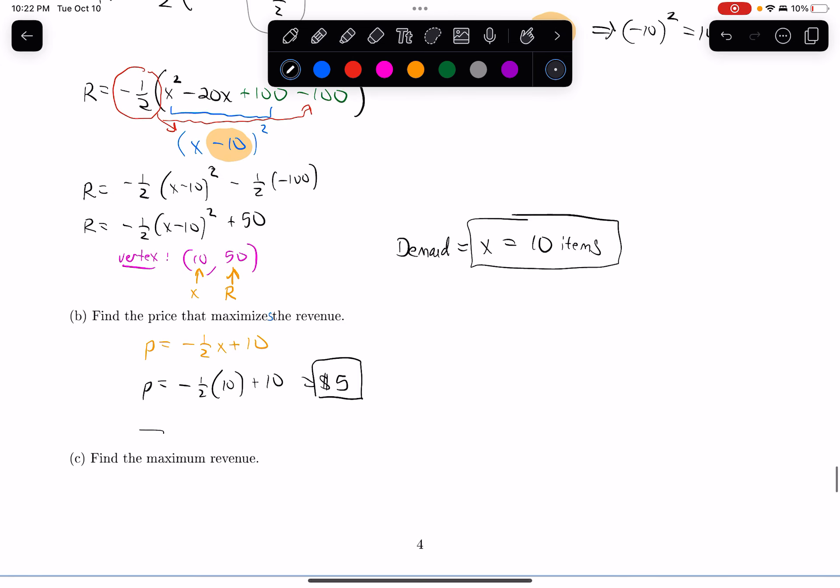And then finally, part C says, find the maximum revenue. So if I wanted to, now that I have price and I got the demand, remember revenue is price times demand, I can multiply those. And that would give me 50. But also I identified R already. R was here. So I can just use that fact. The maximum revenue is 50. We had that earlier. And I should have units. The units of revenue in this case are dollars. And there we have it. There's our maximum revenue.